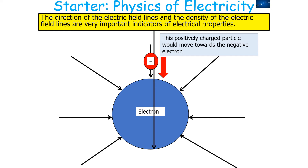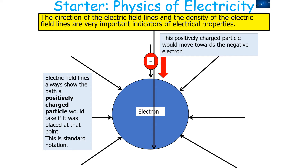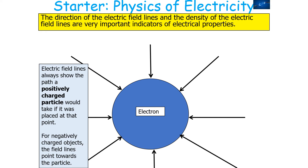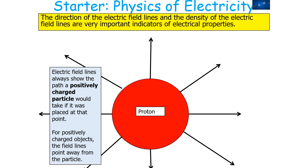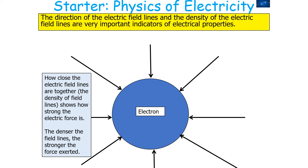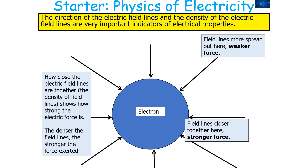A positively charged particle would move towards a negative electron. Electrical field lines always show the path a positively charged particle would take if placed at that point. For negatively charged objects, the field lines point towards the particle, and for positively charged objects, the field lines point away from the particle. How close the electrical field lines are together — the density of the field lines — shows how strong the electrical force is. The denser the field lines, the stronger the force; where field lines are more spread out, you'll receive a weaker electrical force.